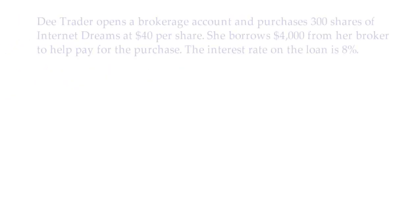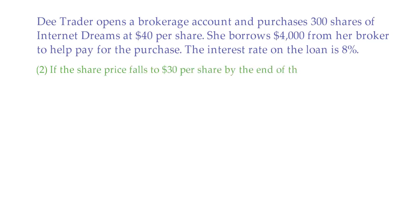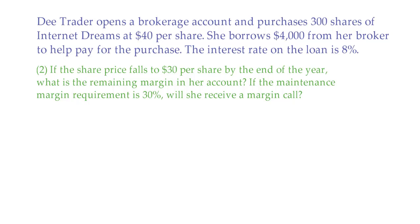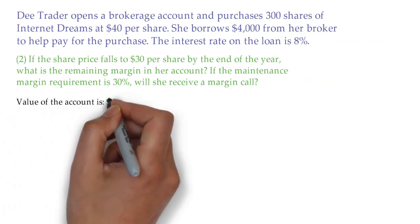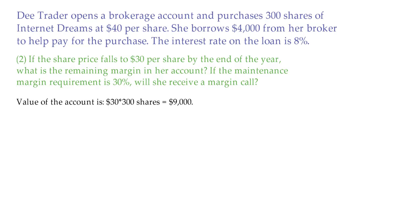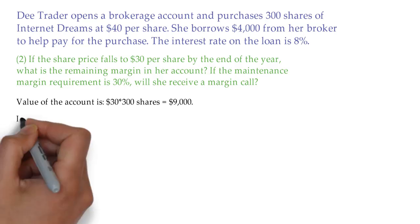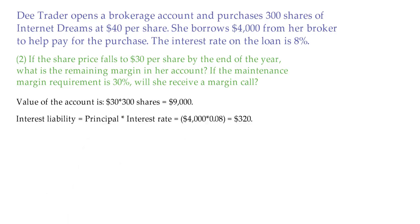If the share price falls to $30 per share by the end of the year, what is the remaining margin in her account? Also, if the maintenance margin requirement is 30%, will she receive a margin call? If the share price falls to $30, the value of the account is now 30 times 300, which is $9,000. The interest charge is 4,000 times 8%, which is $320. So the equity of the account is 9,000 minus 4,000 minus the interest charge, which is $4,680.